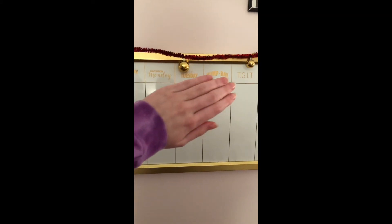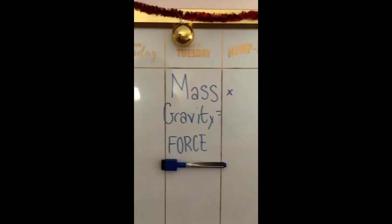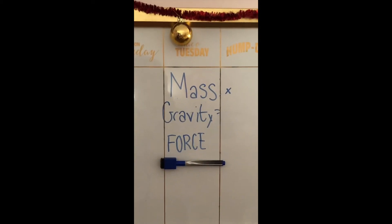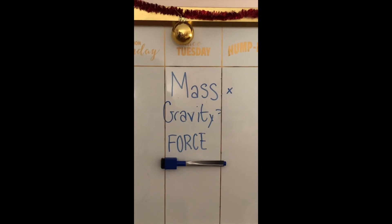Gravity on Earth is 9.8 meters per second squared. The equation for gravity is mass times gravity equals force.